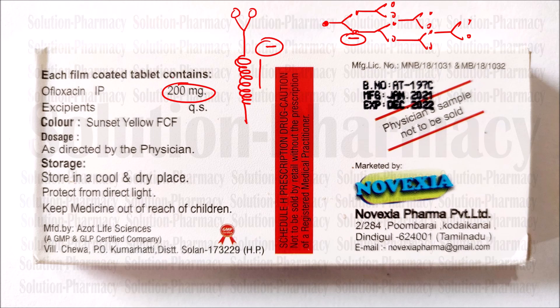Additionally, Ofloxacin affects the transcription process — meaning the coding process by which, when the body needs a particular type of protein, the DNA makes a code via messenger RNA to produce that specific protein. Bacteria also use transcription to produce proteins they need. Ofloxacin inhibits this transcription process. Furthermore, when there is DNA damage in bacteria, DNA gyrase normally repairs it. Ofloxacin inhibits this repair process, so the damage remains unrepaired. In summary, Ofloxacin inhibits super coiling relief, multiplication, transcription, and DNA repair in bacteria — this is the exact mechanism of action of Ofloxacin.